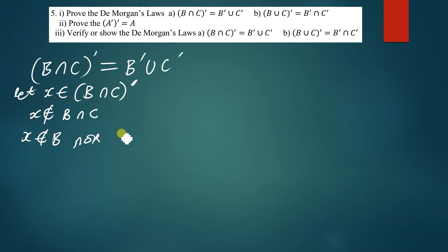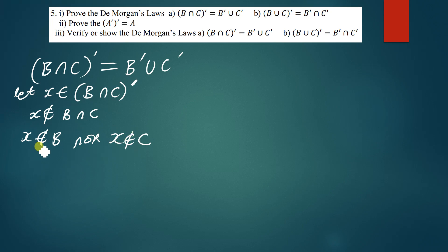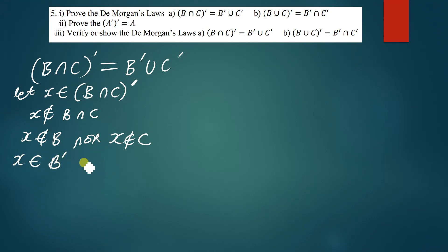So x is not a member of C. Since x is not a member of B and x is not a member of C, we can therefore conclude that x is a member of Bᶜ.